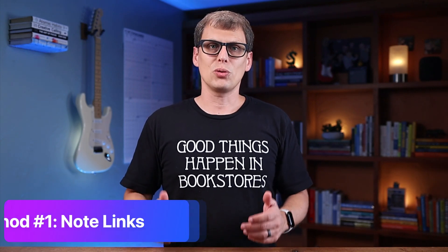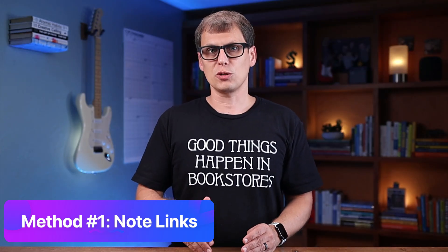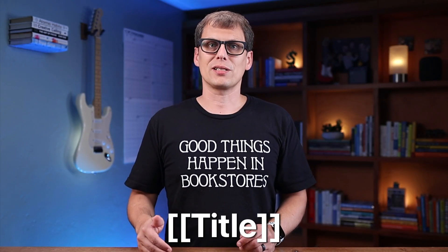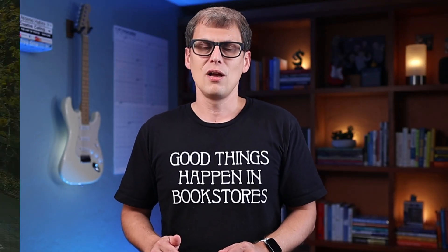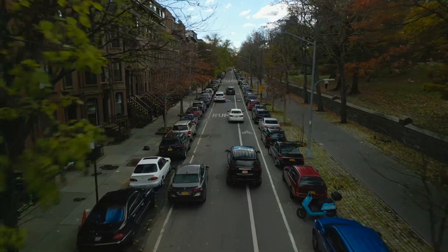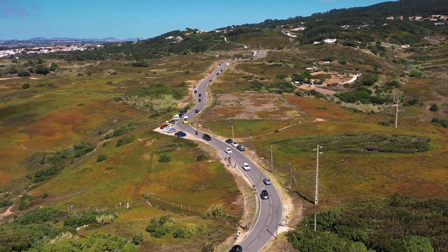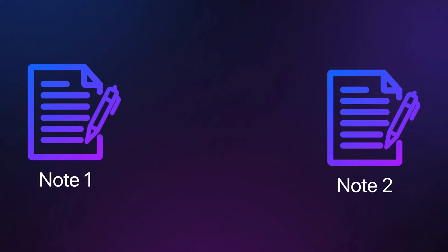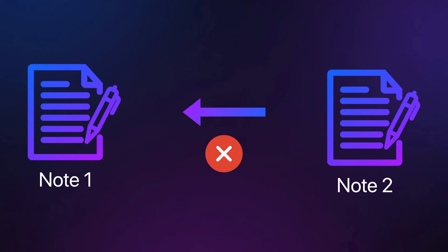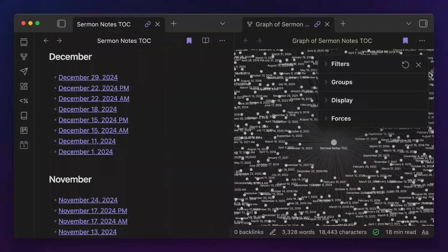The first way you can connect things is via note links. These are bi-directional links that allow you to create explicit connections between your notes by putting a note title in between double brackets. Unlike traditional wiki-style links, these links inside a linked notes app like Obsidian function as a two-way street. A single link creates a connection between two specific notes that you can follow from either direction. This makes it easier to link things together, but it also means your links can get out of control if you use them liberally.